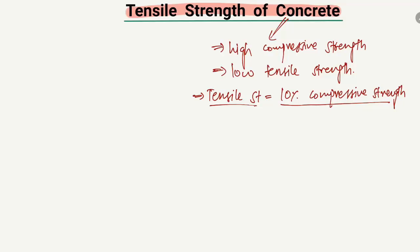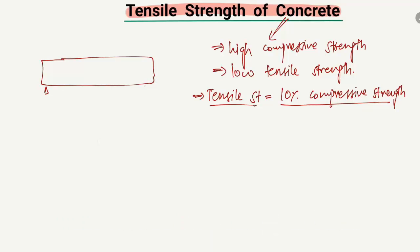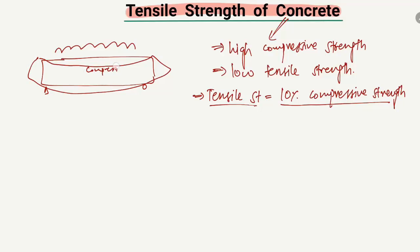For example, consider a beam with supports provided at each end. When a load acts on this beam, it deflects. At the top of the beam we have compressive stresses, while at the bottom we have tension.